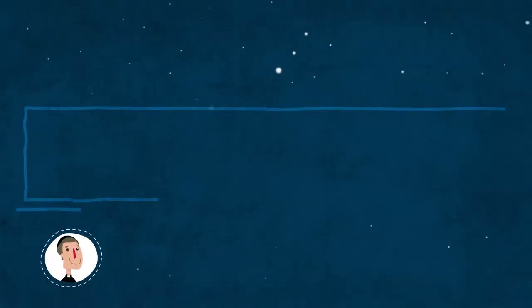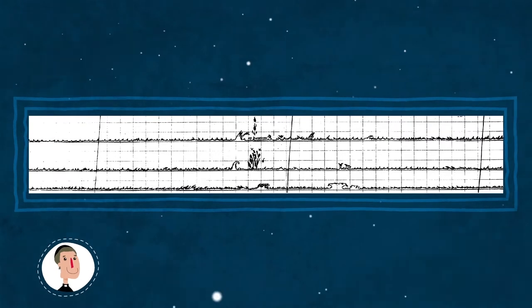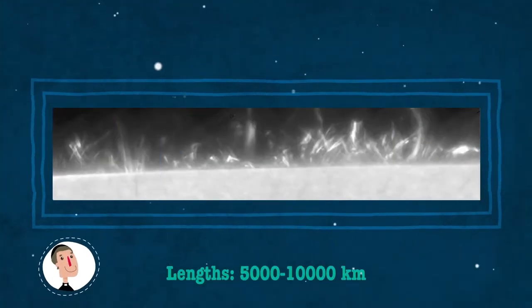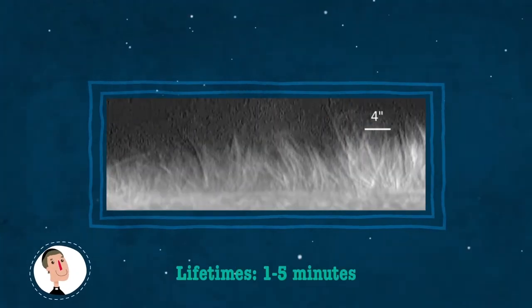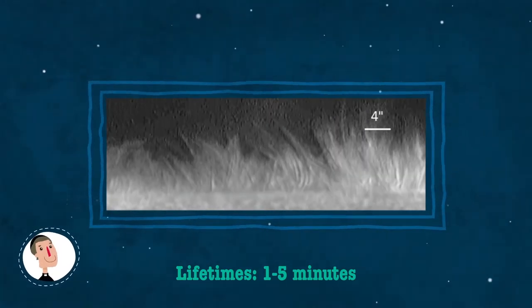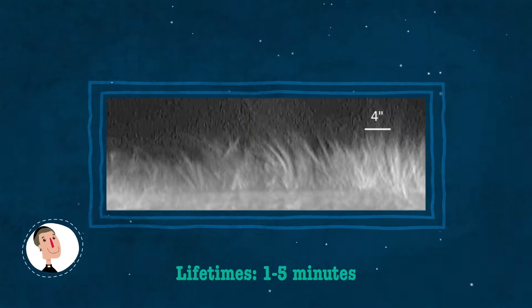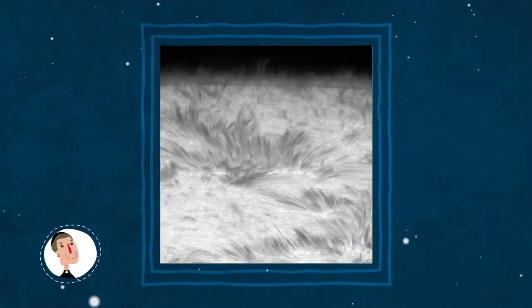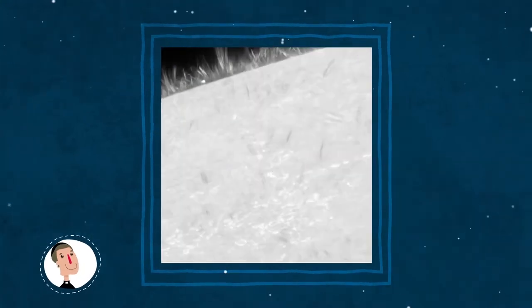Las espículas son chorros de gas en la atmósfera solar. Tienen 500 kilómetros de ancho y longitudes de varios miles de kilómetros. Pero sus vidas son muy cortas, solo unos minutos. Aparecen y desaparecen continuamente. Se estima que en cada momento hay cientos de miles de espículas en nuestra estrella, distribuidas por todo el disco.